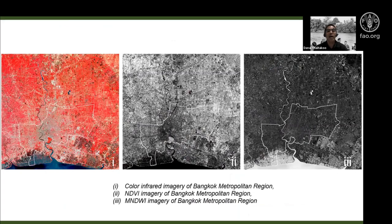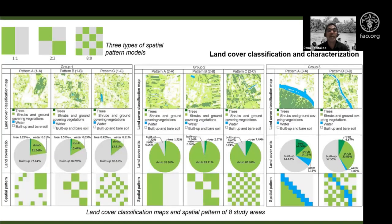The basis for our land classification uses the Normalized Difference Vegetation Index (NDVI) and the Modified Normalized Difference Water Index (MNDWI) to classify land cover. This is what the land cover classification and characterization looks like.